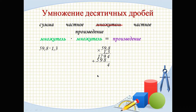9 plus 8 = 17, write 7, carry 1. 7 plus 9 = 16, plus 1 = 17, write 7, carry 1. 1 plus 5 = 6, plus 1 = 7.